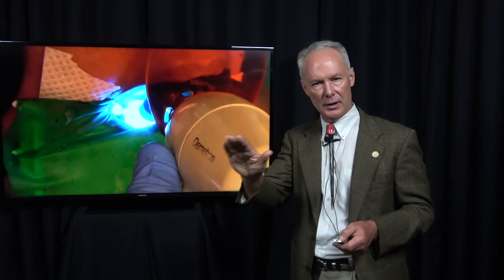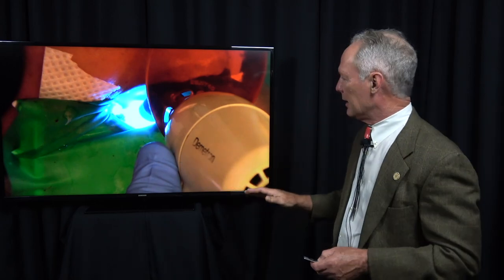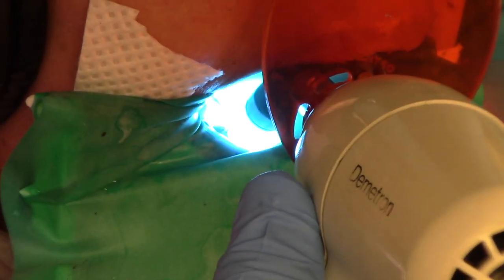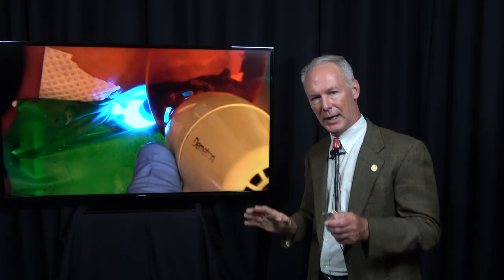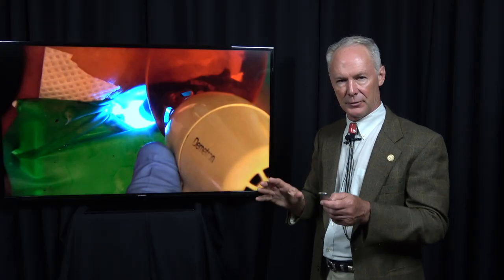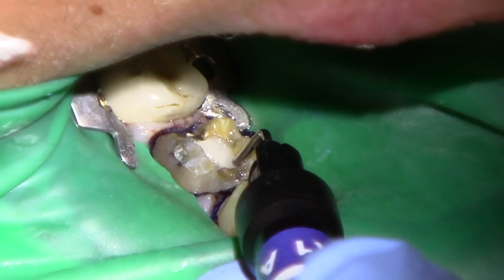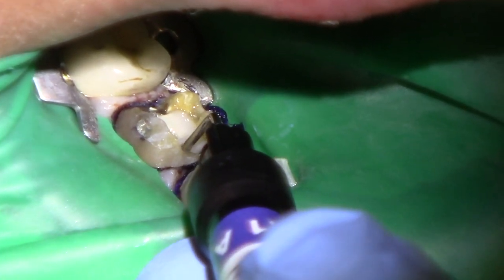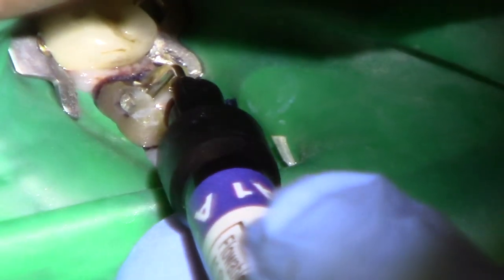I don't want to blow the gingival tissue. I just want to blow off the excess primer adhesive until nothing moves. You don't want to leave a pool of primer adhesive on the teeth. You want to blow all of it off until nothing wiggles. Then, always cure the primer adhesive before placement of the filled resin or the composite. I'm going to cure that for about five seconds.